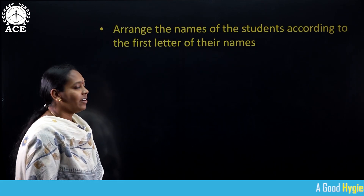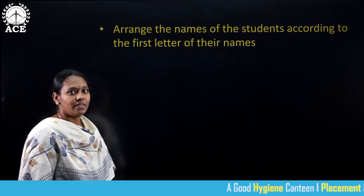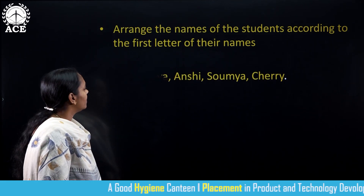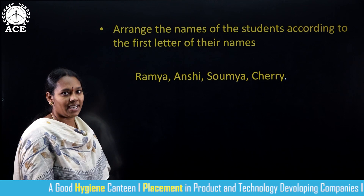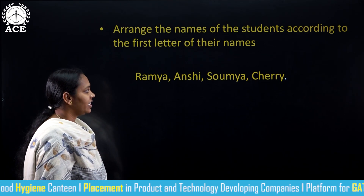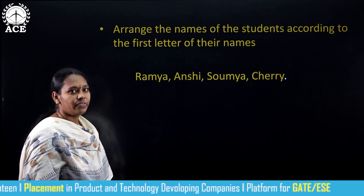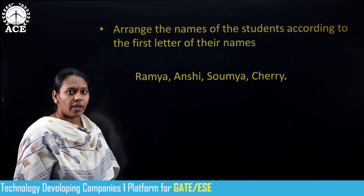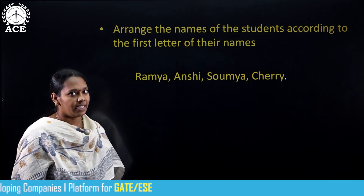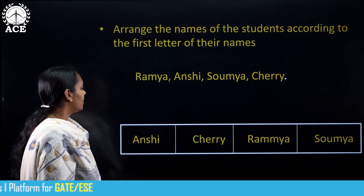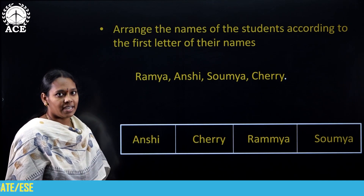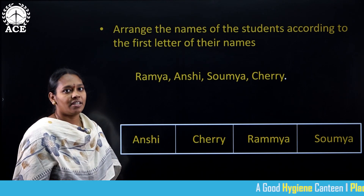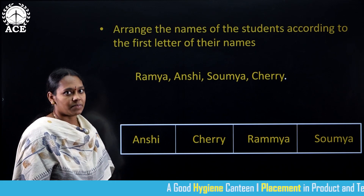Here, I want to arrange the list of names according to the first letter of their names. We have a list of names: Ramya, Hanshi, Soumya, Cherry. We need to arrange these names in sequential order, according to the first letter of their names. This is an ordered list after arranging all the names in sequential order according to the first letter of their names.